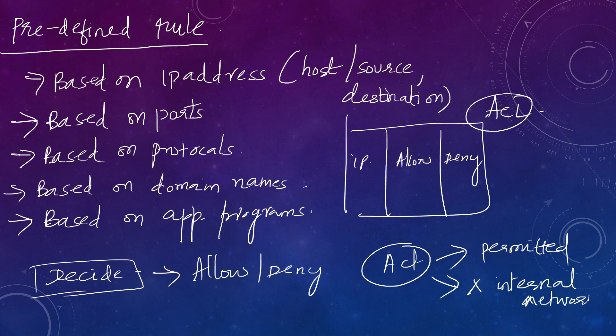The 'A' stands for Act accordingly. If it is allowed as per the predefined rules, it is permitted traffic and can enter. Otherwise it will be denied and not permitted inside the internal network. In short, the role of a firewall is to restrict or protect the internal network from unauthorized access from the external network or internet - it is a barrier between the internal and external network.